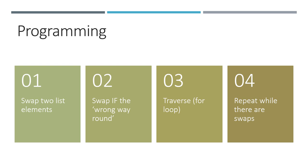Then we're going to put that inside a for loop so that we pass down the entire list. And then we're going to put the whole thing inside a while loop so that it keeps repeating while there are any swaps. So we're actually going to start at the bottom of the program and work backwards.